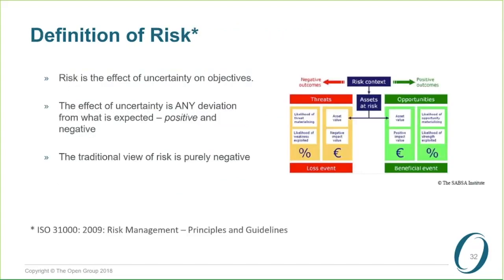From ISO 31000, risk is the effect of uncertainty on objectives. Uncertainty is any deviation from what is expected — positive and negative. Our traditional view of risk is that it's a bad thing, but the view from security people is that risk is potentially a good thing. So when managing risk, not only should we be trying to mitigate the impact of negative risk, we should also be trying to maximize the impact of positive risk. This has a significant impact on how we think about risk.